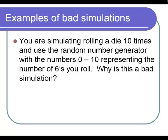Okay, here's some bad simulations, things that are set up incorrectly. We're rolling a die 10 times. We want to see how many sixes we get in those 10 rolls. So we use numbers 0 to 10 to represent how many sixes we get. That's not correct.